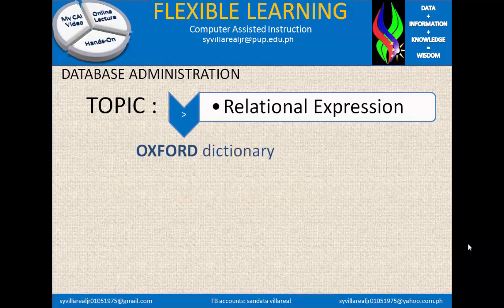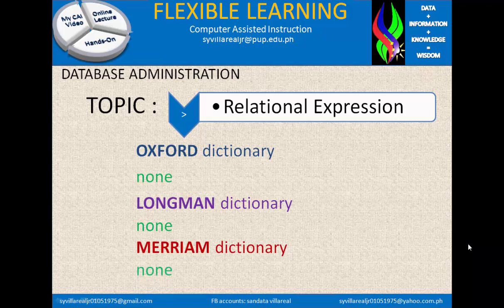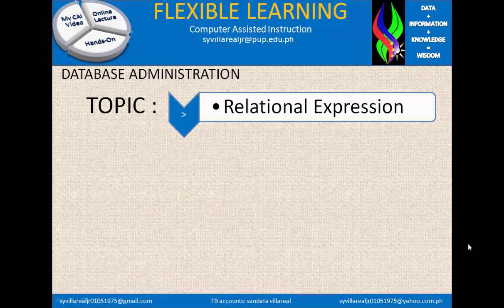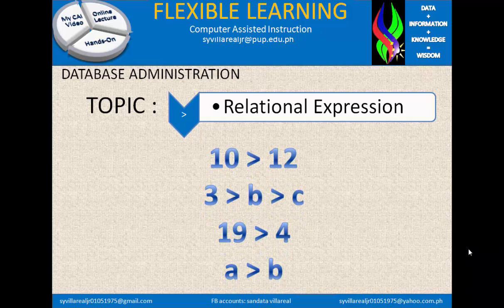What is greater than? In Oxford, Longman, and Merriam Dictionary, there is no meaning because it goes to the computer dictionary rather than the English dictionary, since relational is considered to be syntax of a computer language. Example: 10 greater than 12 — false. 3 is greater than B and greater than C — true or false. 19 is greater than 4 — true. And A is greater than B — true or false.